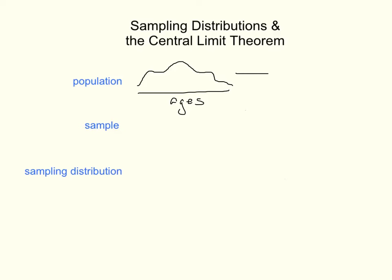That population will have a mean, and let's say in this case it's about 19.1 years, and it will have a standard deviation, and let's suppose that's about 2.3 years.